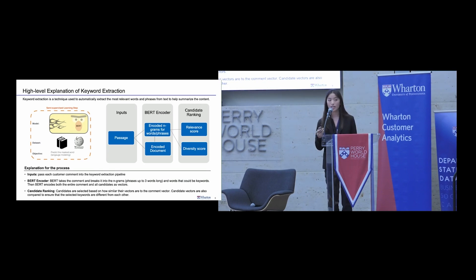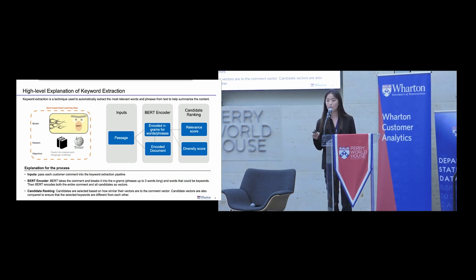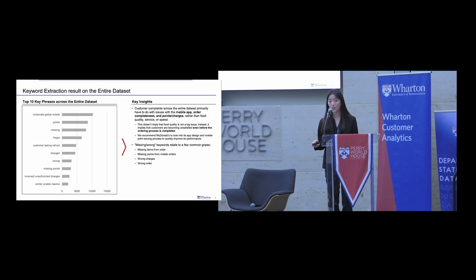How BERT works: it takes in a passage — in this case a complaint — and breaks it down into n-grams or phrases as candidate keywords. For each candidate keyword it computes two scores: a relevancy score, which measures how similar that keyword is to the entire complaint as a whole, and a diversity score, which shows how diverse that keyword is relative to other generated keywords. It tries to maximize both scores, then releases a list of keywords with their respective relevancy scores.